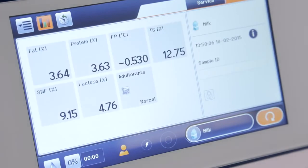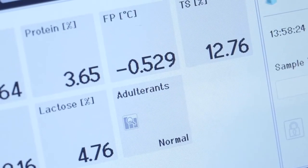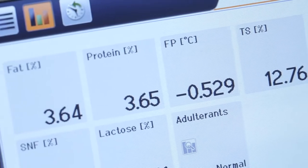Adulteration screening options allow you to check milk for abnormalities such as known or unknown adulterants and added water.